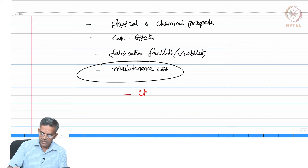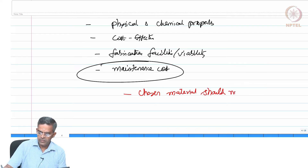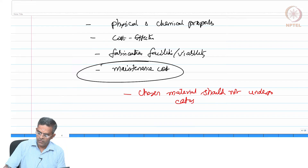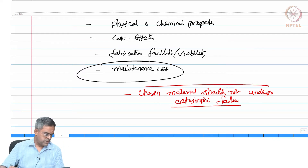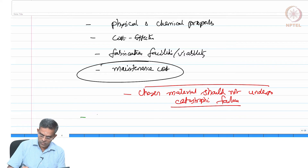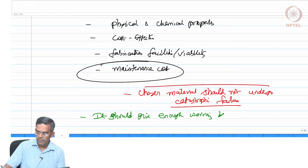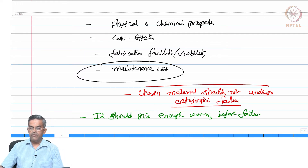In addition, the chosen material should not undergo catastrophic failure — that is an important statement. It should give enough warning before failure. One may wonder how a material can give warning, since structural systems give warning as per design, which we already know.